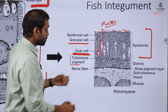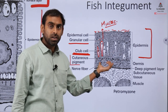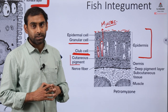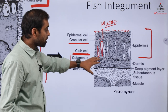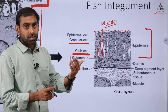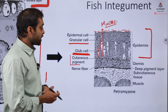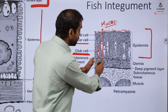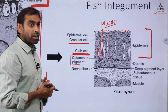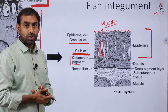Besides this, there is also a cutaneous pigment layer beneath the epidermis, which gives the organism its distinct color. In humans, skin color comes from melanin — a special chemical originating from amino acids — but in amphioxus, there is a direct pigment layer that gives color to the skin.